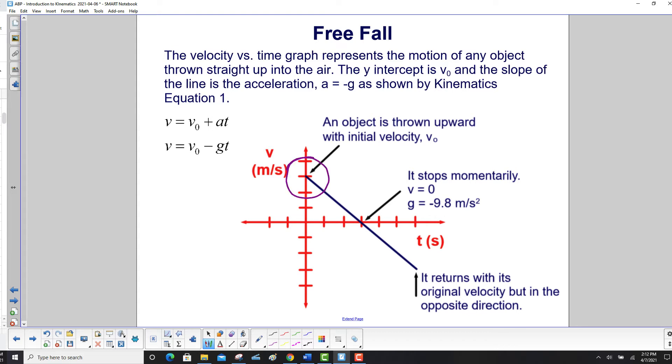And the slope of the line is the acceleration a is equal to negative g, so that's a negative slope, as shown by kinematics equation 1, where we substitute in negative g for the acceleration. So it makes sense, right? The line has a negative slope. It's a straight line. It's a linear function.